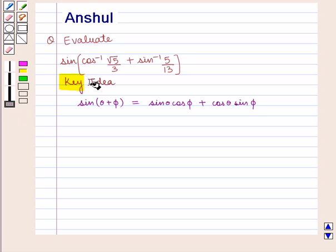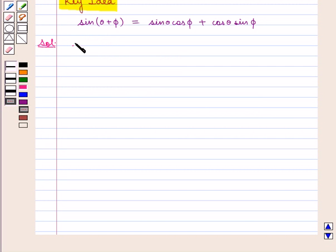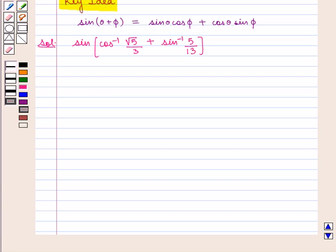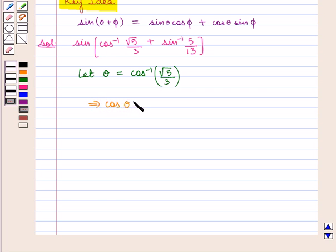With this key idea let us proceed with the solution. We have the expression sin of cos inverse of square root of 5 by 3 plus sin inverse of 5 by 13. Let θ be equal to cos inverse of square root of 5 by 3, which implies that cos θ is equal to square root of 5 by 3.